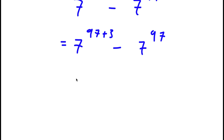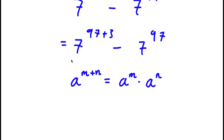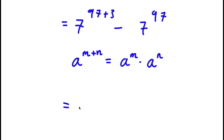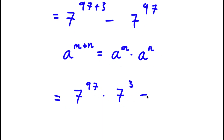If I have something in the form a to the power of m plus n, this is equal to a to the power of m times a to the power of n. So in this case, 7 to the power of 97 plus 3 is going to equal 7 to the power of 97 times 7 to the power of 3. Then I have minus 7 to the power of 97.